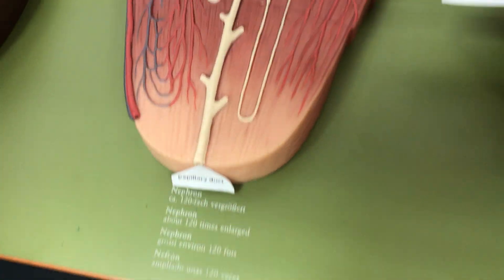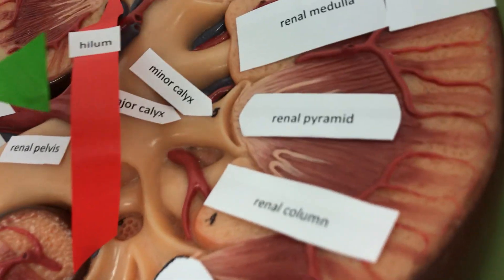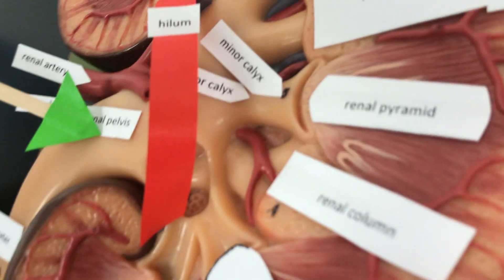From the papillary duct, we will drain into the minor calyx, the major calyx, the renal pelvis, and then the ureter will take it to the bladder.